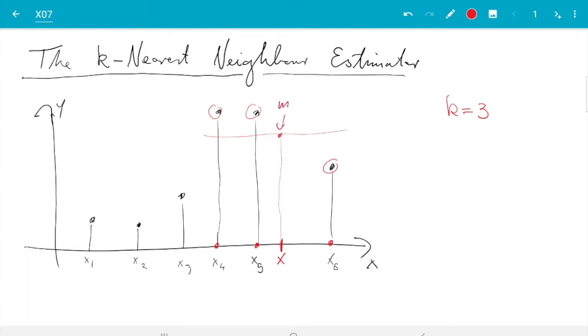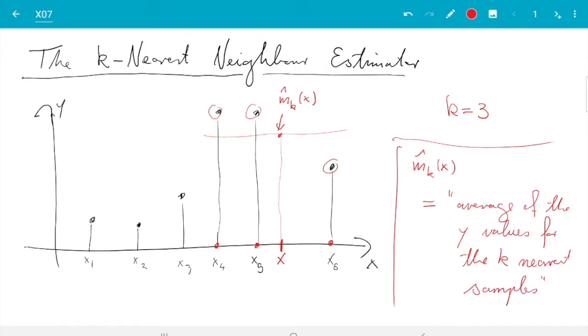And then that's our estimate for the mean line at the point x. So this one here we call m hat of x and since it depends on the number of points we used, I call it m hat k of x. Let me first write what we are doing. m hat k of x is, I will write it in words here, average of the y values for the k-nearest samples.